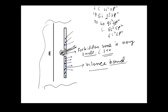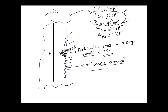Group 14 elements include carbon, silicon, germanium, and tin. Tin has atomic number 50, and lead has atomic number 82. Among these, silicon and germanium behave as semiconductors. In their very pure state, silicon and germanium are called intrinsic semiconductors.